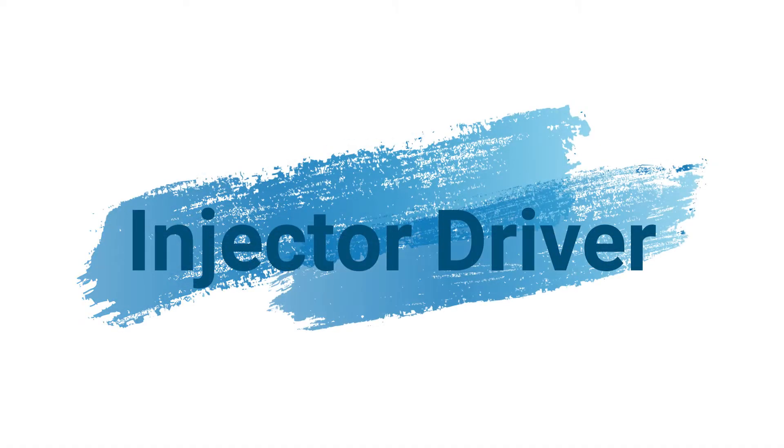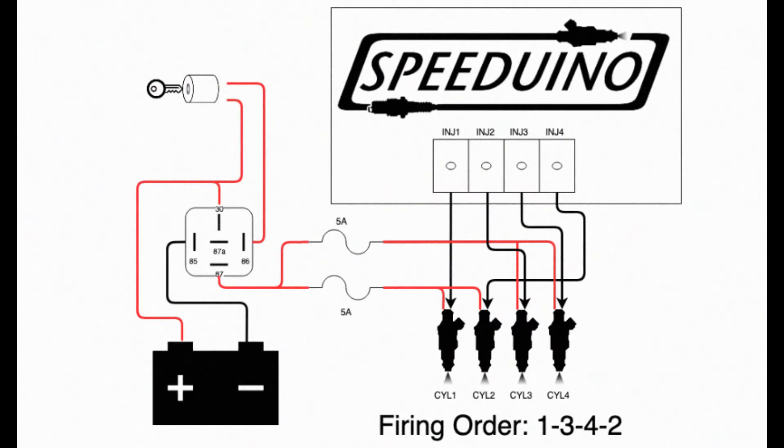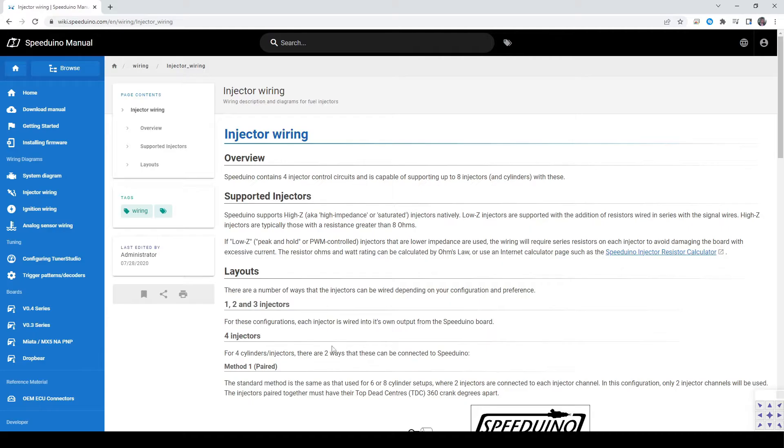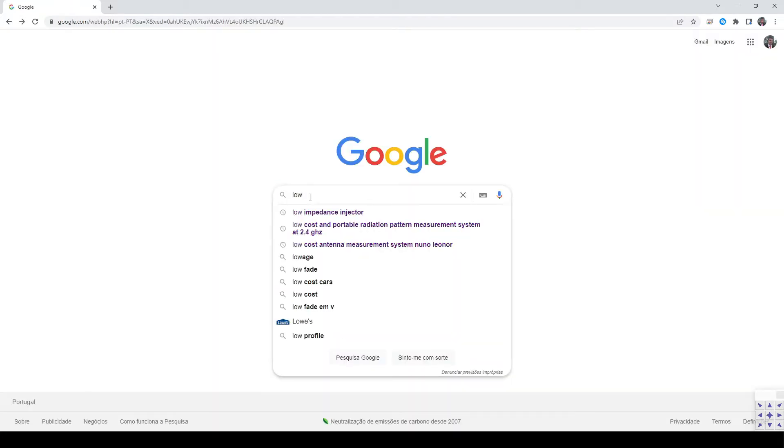If the problem is not the timing, sensing or ignition, it's related to the injection. I got back to the books and online searching and concluded that, despite the Speeduino states that low impedance injectors are supported using a current limiting resistor, they might not work properly, especially if they were designed to operate with peak and hold currents.